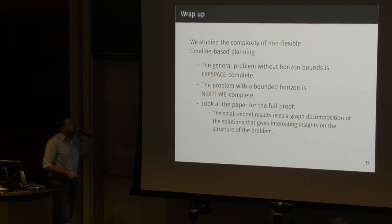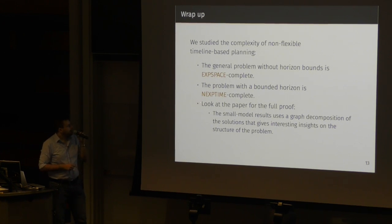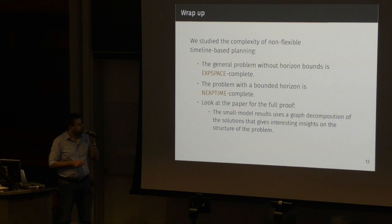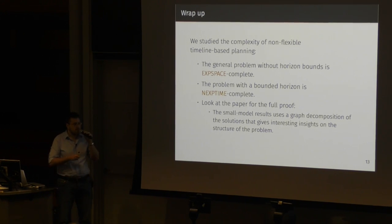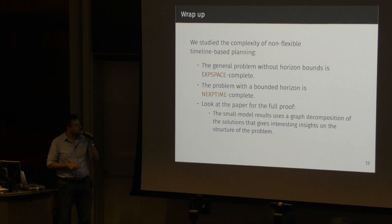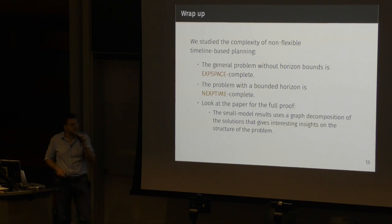So to wrap up, we studied the complexity of non-flexible timeline-based planning in the form of the language formalized in the paper that I've shown you before. And so the general problem without bounds on the horizon is EXPSPACE complete. The problem with a bounded horizon is NEXPTIME complete. And if you are interested in these things, I suggest you to look at the paper for the full proof of theorem 1, because the techniques that we use, besides some not so important combinatorial arguments, are based on a graph decomposition of the solutions of this problem, which I think gives interesting insight on the structure of the problem that I don't have time to show you now.